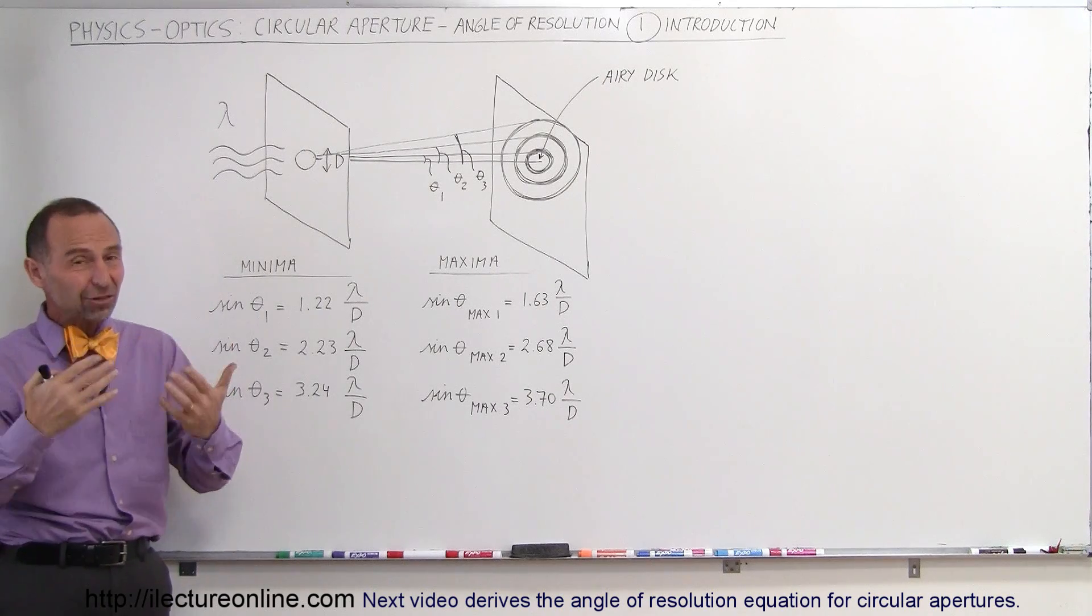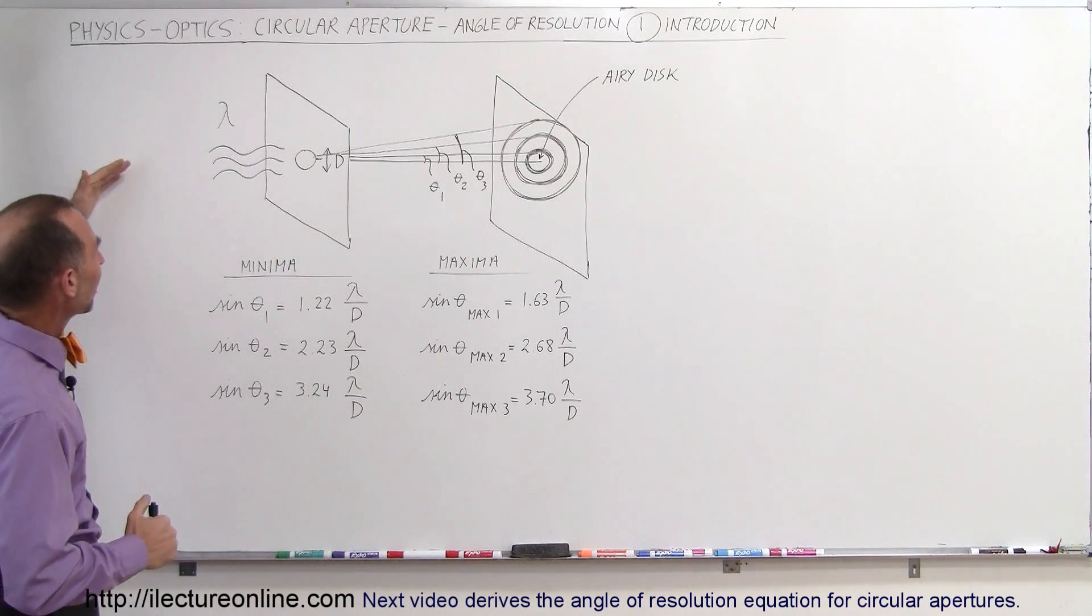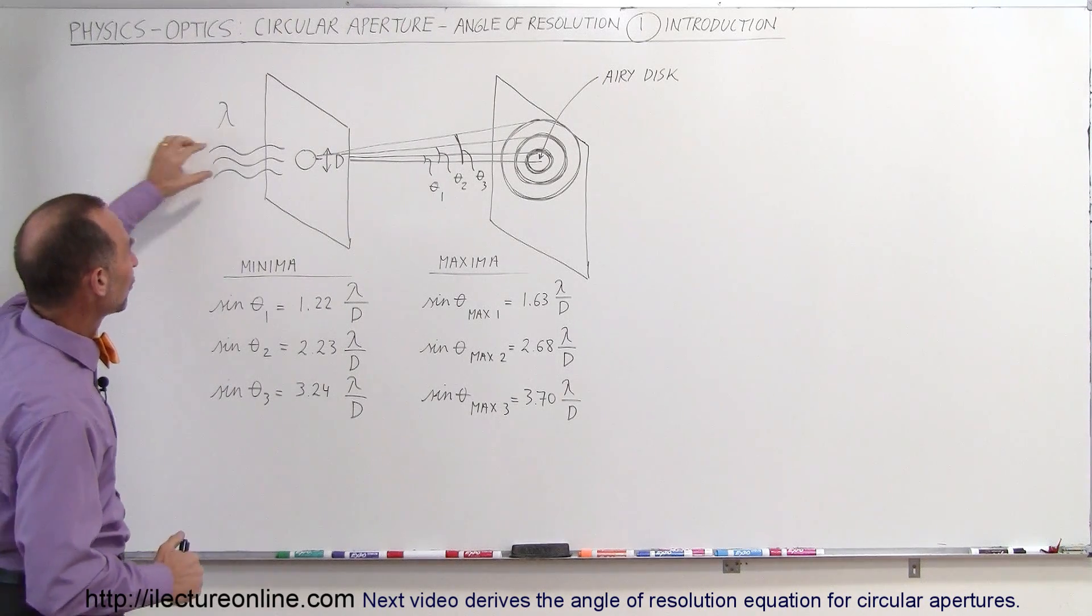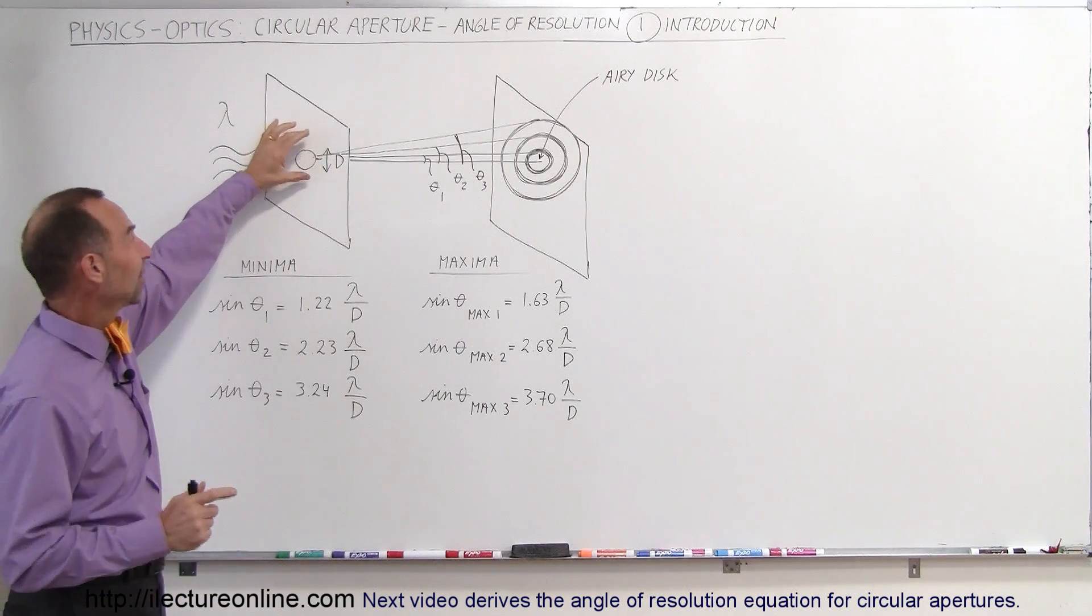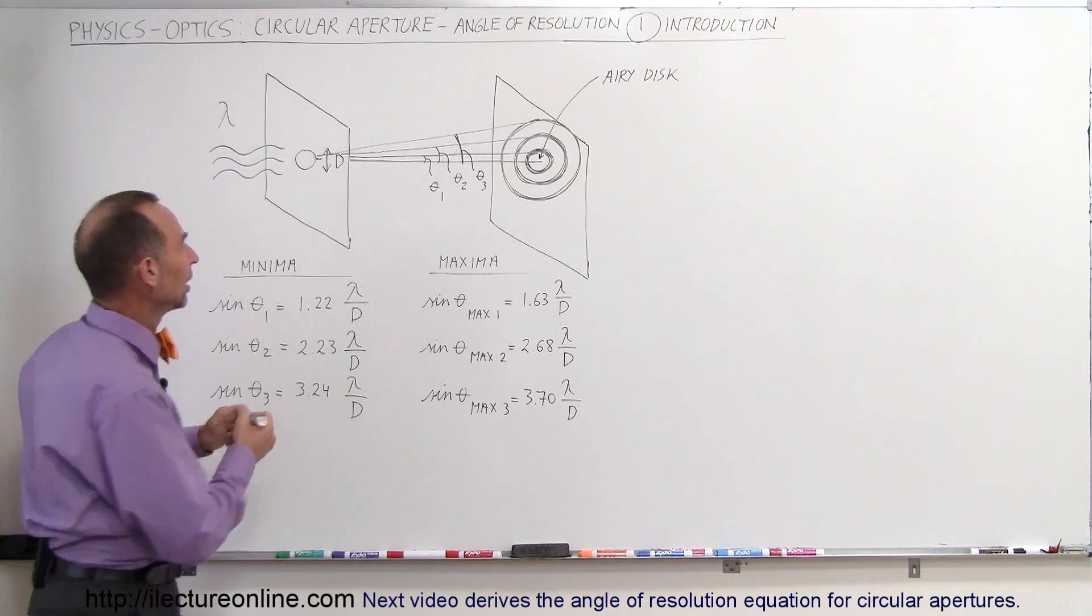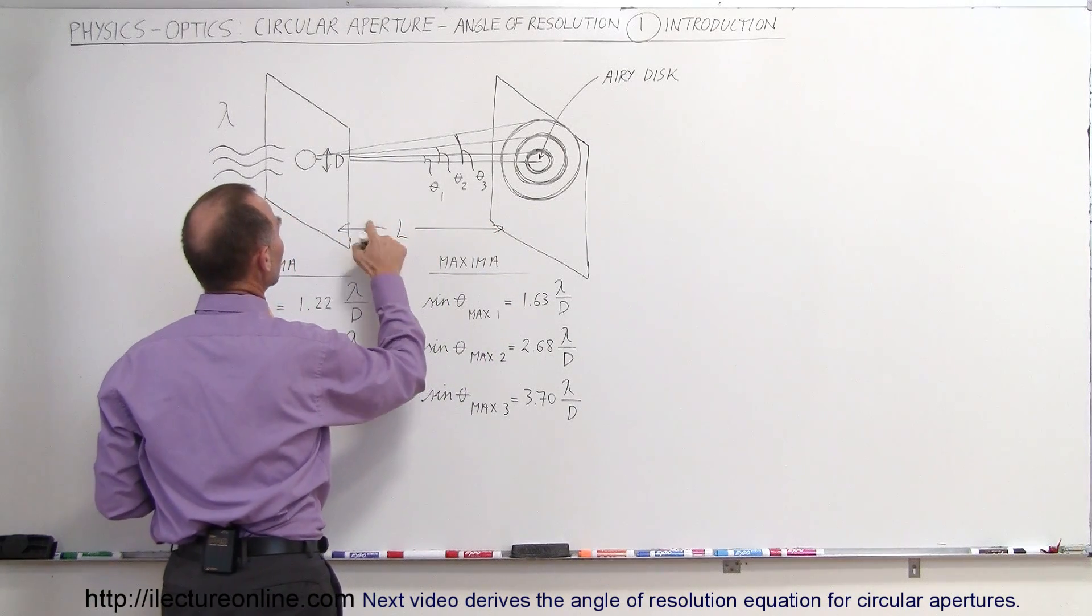Therefore the diffraction grating for those apertures look very different. Here's an example: let's say we shine some light of a particular wavelength through a very small opening, this is the aperture. Big D represents the diameter of that aperture.